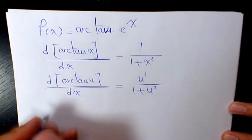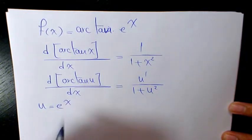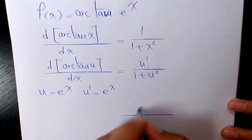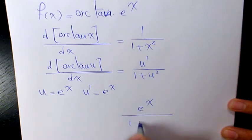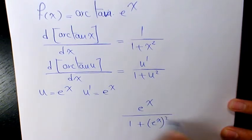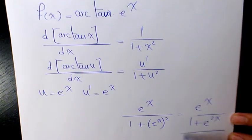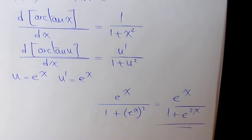In this case, u is e to the power of x, u prime is derivative of e to the power of x, which is the same thing. So the answer is e to the power of x over 1 plus e to the power of x to the power of 2. That's e to the power of x over 1 plus e to the power of 2x. That's the final answer.